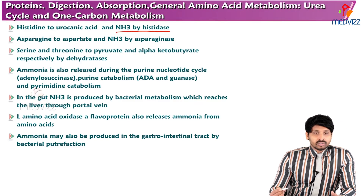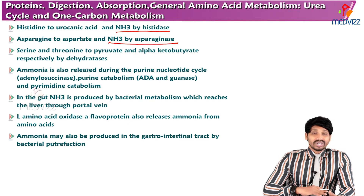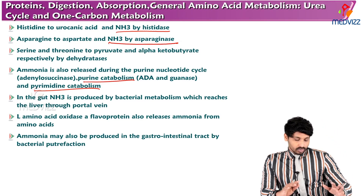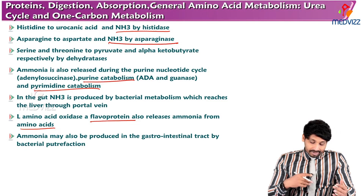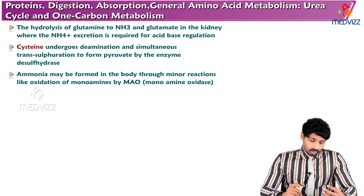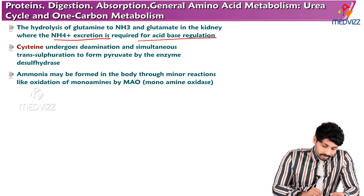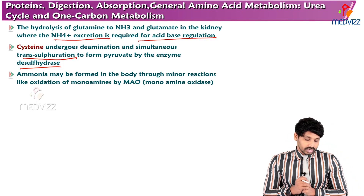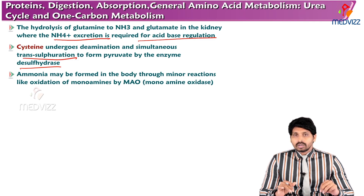Additional sources of ammonia include: histidine to urocanate and ammonia by histidase; asparagine to aspartate and ammonia by asparaginase; serine and threonine to pyruvate and alpha-ketobutyrate by dehydratases; the purine nucleotide cycle; gut bacterial metabolism reaching the liver through the portal vein; L-amino acid oxidase as a flavoprotein; hydrolysis of glutamine to ammonia and glutamate in the kidney for acid-base regulation; and cysteine deamination via desulfohydrase to form pyruvate.